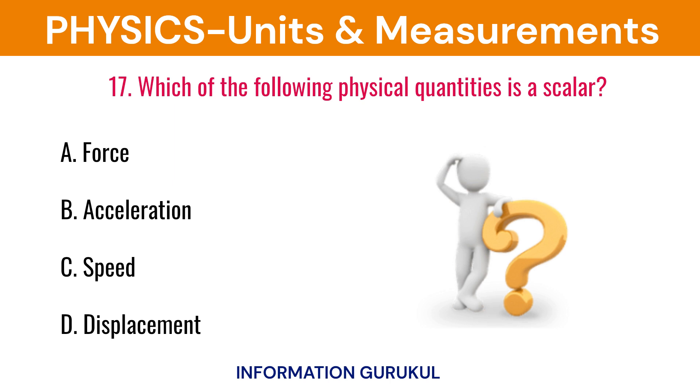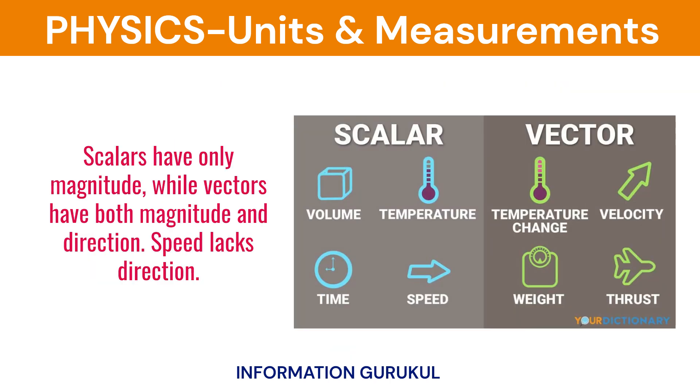Which of the following physical quantities is a scalar? Speed. Scalars have only magnitude, while vectors have both magnitude and direction. Speed lacks direction.